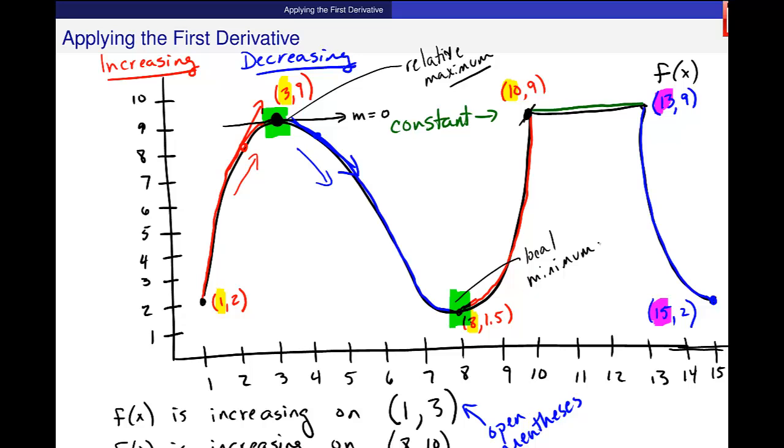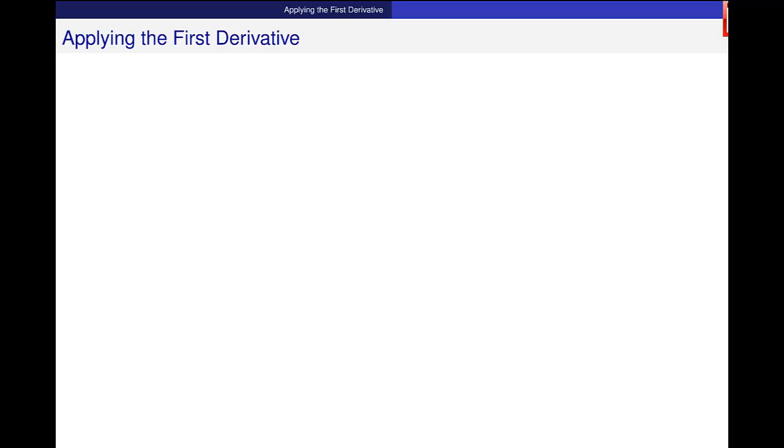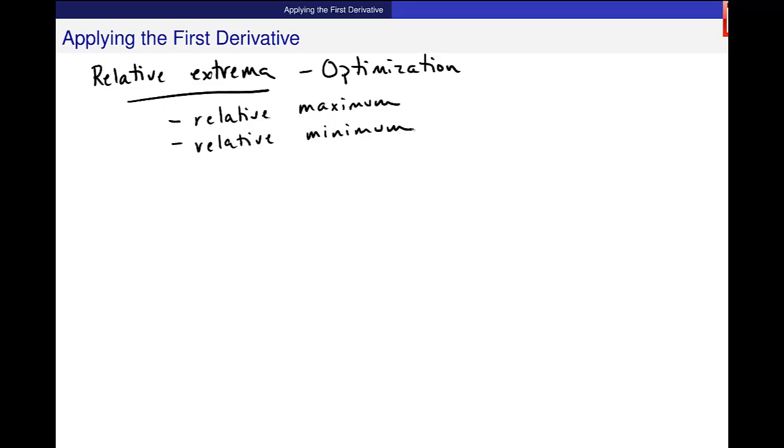So these ideas, these points, relative maximums and minimums, we want to talk about them and how we find them using the first derivative. So these are called, in general, relative extrema. It's the beginning of a study of mathematics called optimization, like finding the highest and lowest points, output values. And these relative extrema are relative maximums and relative minimums.